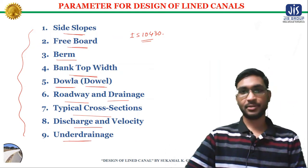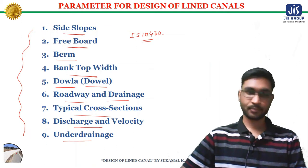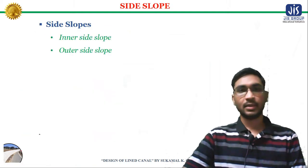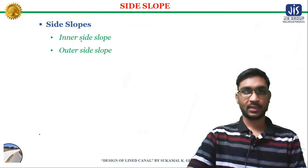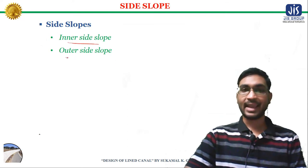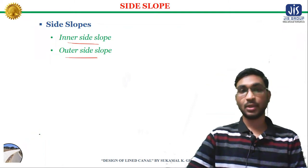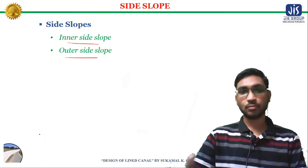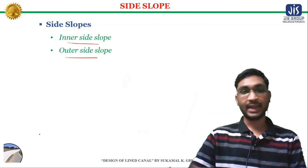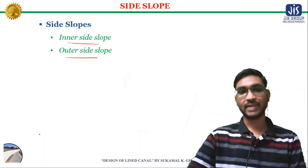Side slopes are basically two types: the inner side slopes and the outer side slopes. Lining is usually made to rest on stable slopes of the natural soil, so the slope should be such that no earth pressure or any other external pressure is exerted over the back of the lining. Sudden drawdown of water level in the lined canals should be controlled by strict operation rules and regulations to avoid external pressure on the lining.